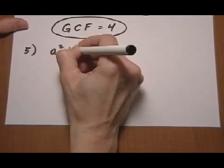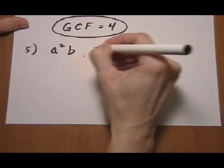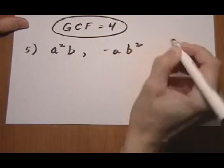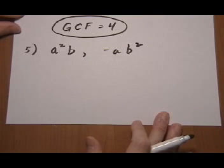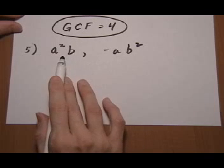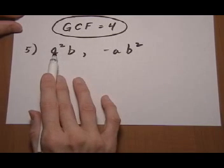So let's say we have A squared times B and minus AB squared. Okay, so if you see right away what the greatest common factors are, that's great. You can just list them.